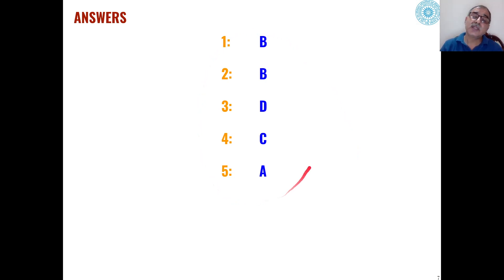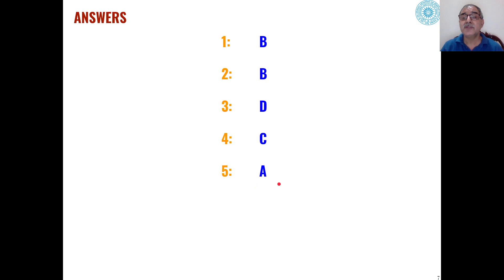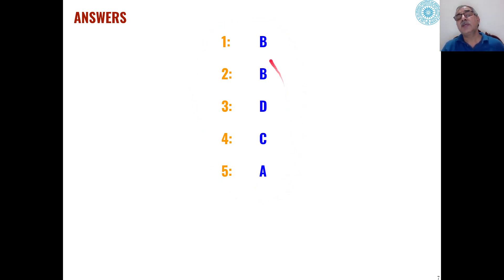These are the answers to the five problems discussed. The first question has answer B. The second is also B. The third is D. The fourth is C. And the fifth is A. In the subsequent slides, we will see how these products are formed.